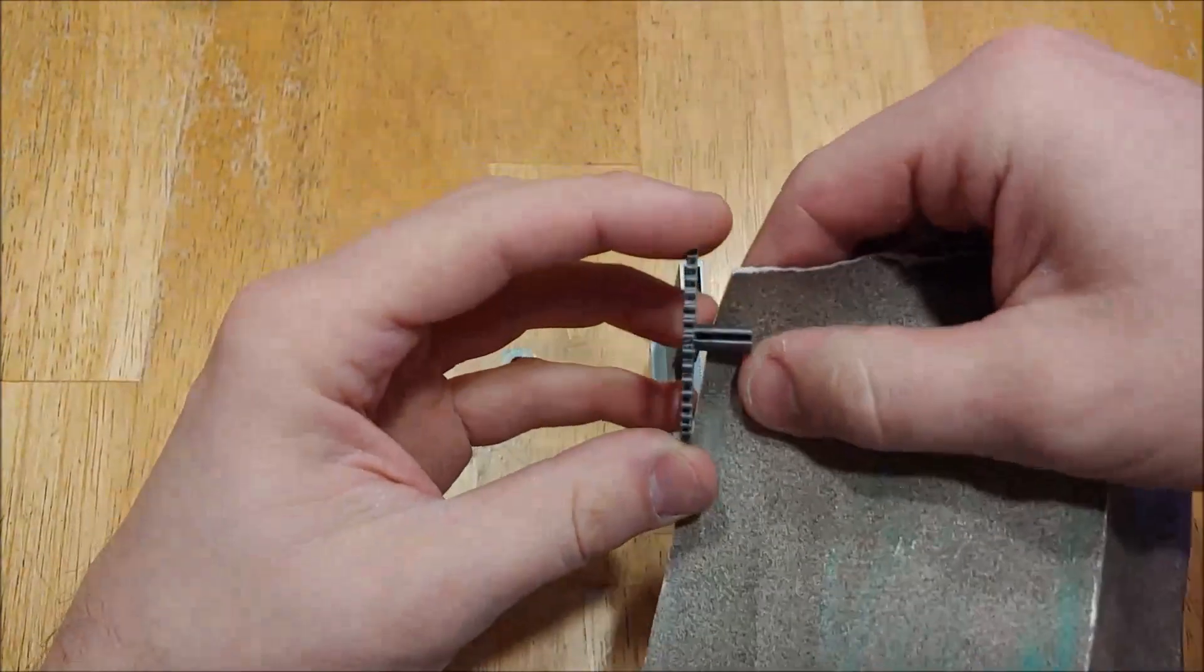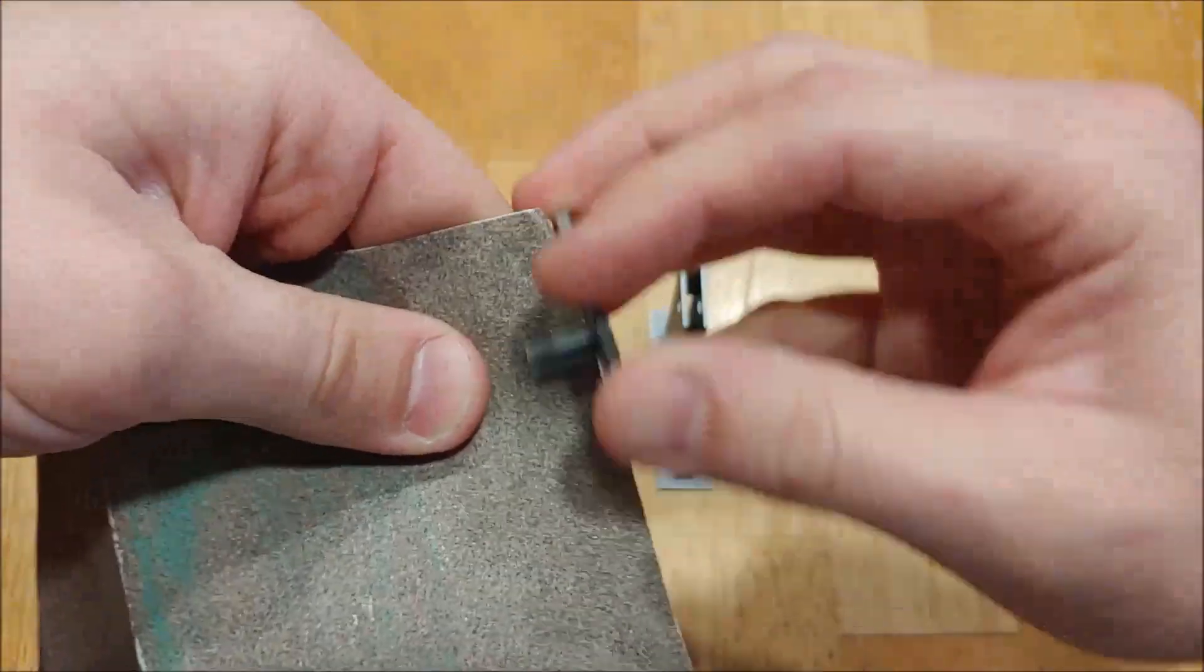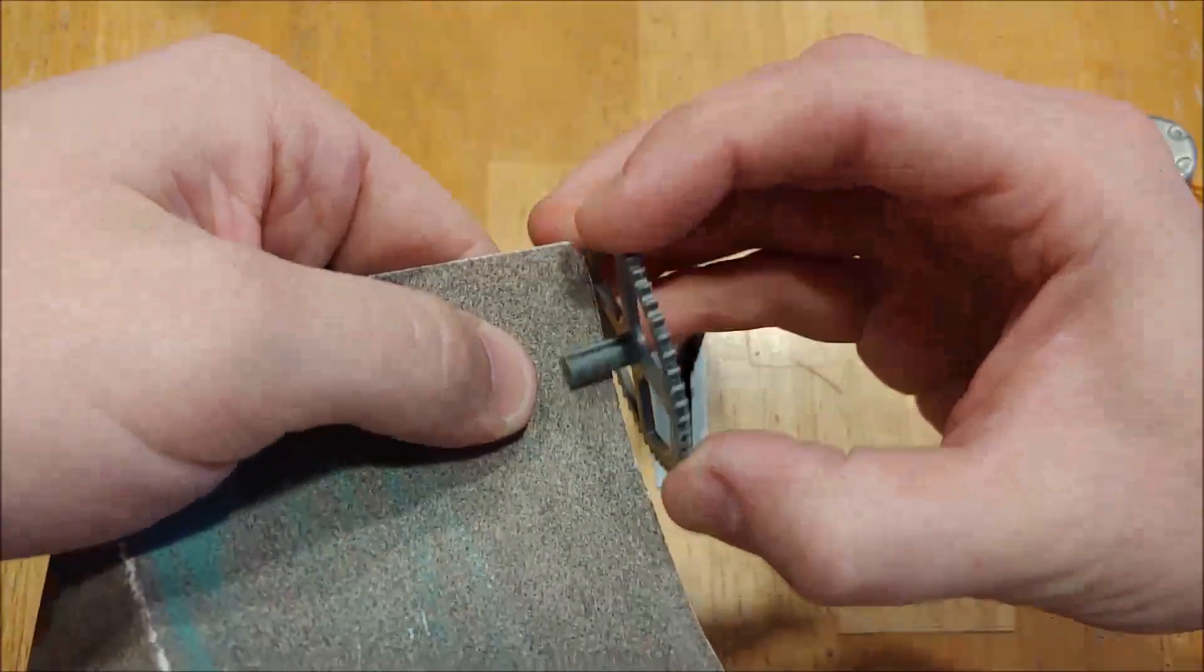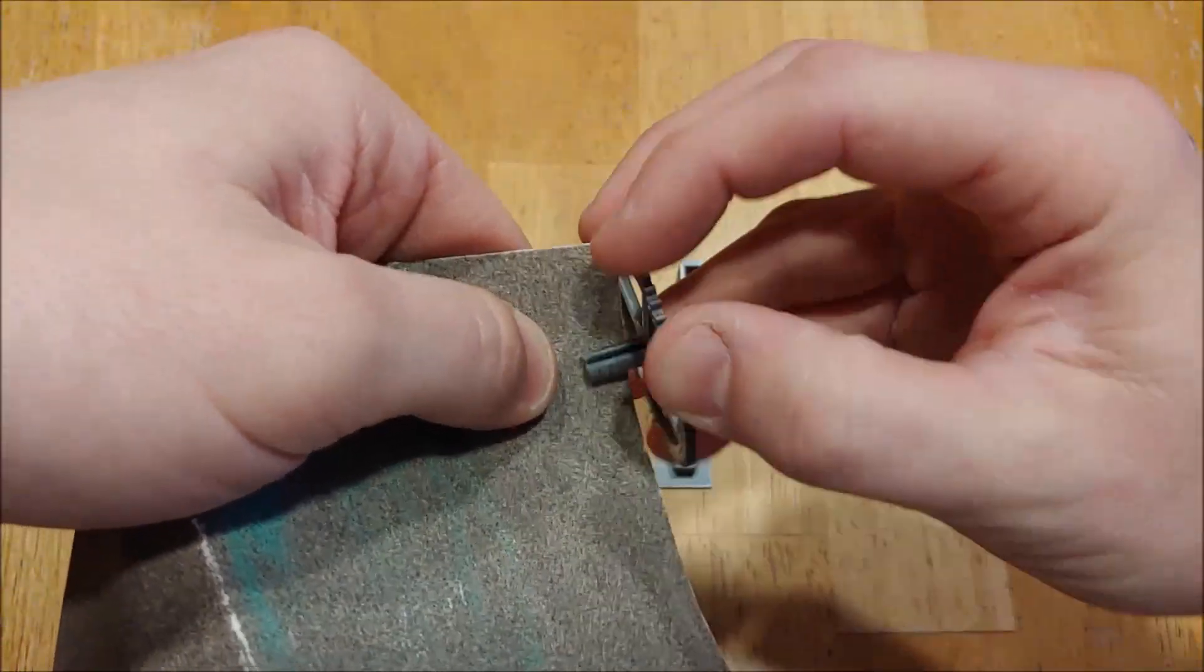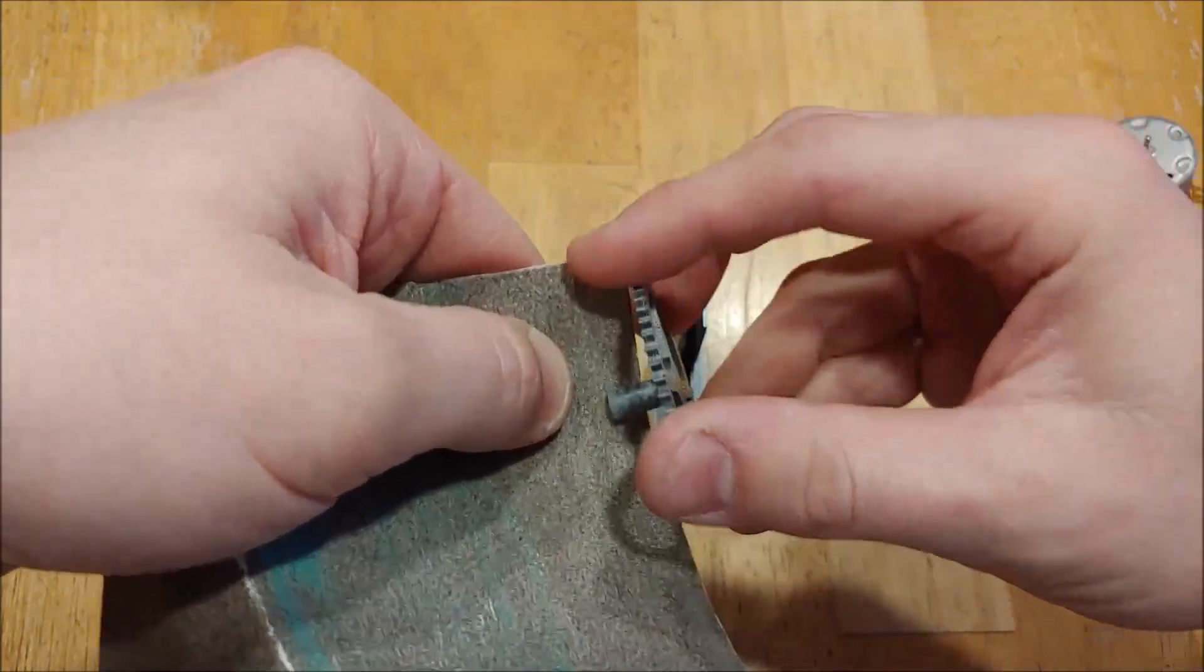So take a little bit of sandpaper if it is, you know, check first of course. It can also help to put a little bit of a tapered edge onto the end of the axle here, just to help it get in initially.